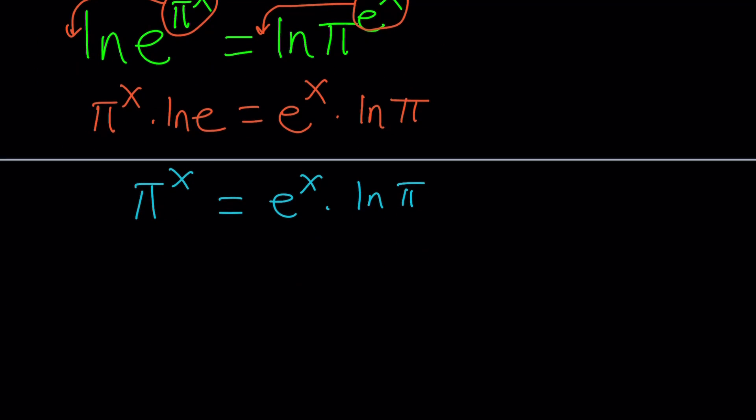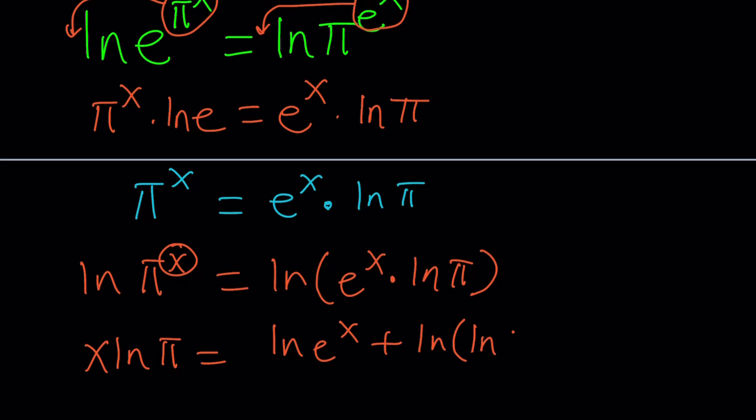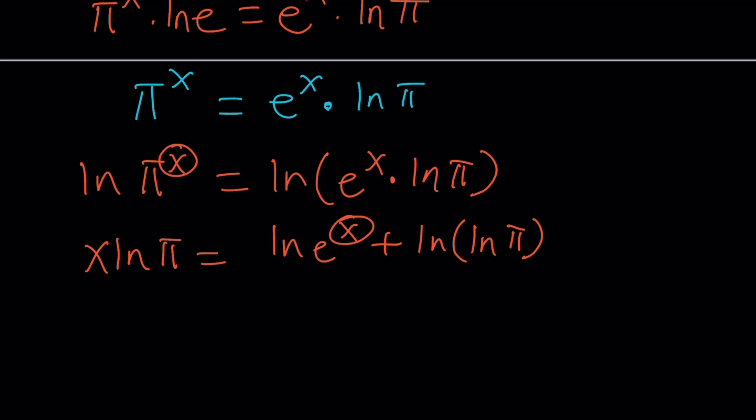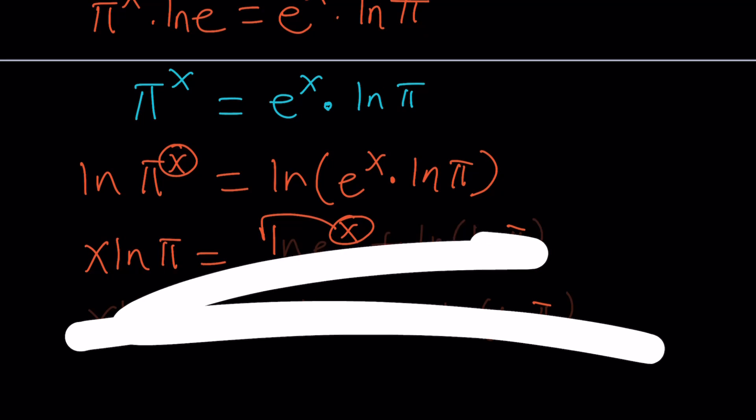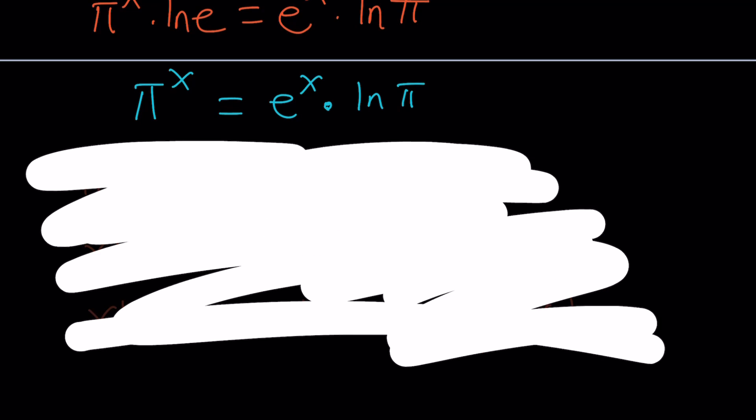If you wanted to ln both sides one more time, this is what it would look like. ln pi to the x equals ln e to the x times ln pi. We're going to bring this x to the front. That's going to give us x ln pi. And then here, it's going to be ln e to the x plus ln ln pi. So you kind of have to double ln. You're going to bring this to the front, and yes, this is going to accomplish what you're trying to do. You can do it that way, but I have a different idea. That's an alternative that works.